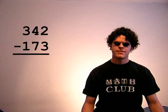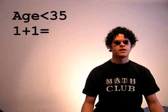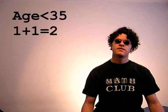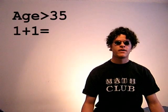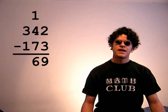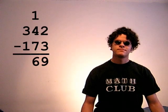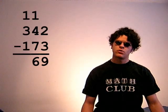342 minus 173. Now remember how we used to do that. 3 from 2 is 9, carry the 1, and if you're under 35 or went to a private school, you say 7 from 3 is 6, but if you're over 35 and went to a public school, you say 8 from 4 is 6.